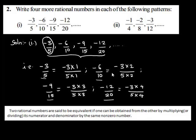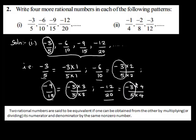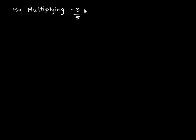As you can see, negative 6 upon 10 is obtained when negative 3 upon 5 is multiplied by 2 in both numerator and denominator. Negative 9 upon 15 is obtained when negative 3 upon 5 is multiplied by 3 in both numerator and denominator. Similarly, negative 12 upon 20 is obtained when negative 3 upon 5 is multiplied by 4 in both numerator and denominator. So, we have obtained the first 4 terms of this pattern by multiplying negative 3 upon 5 by 1, 2, 3, and 4 respectively.